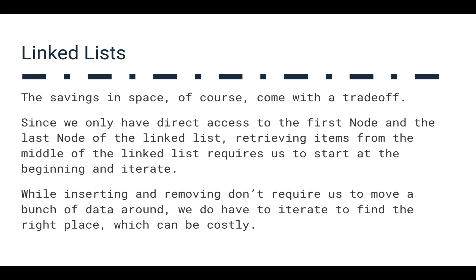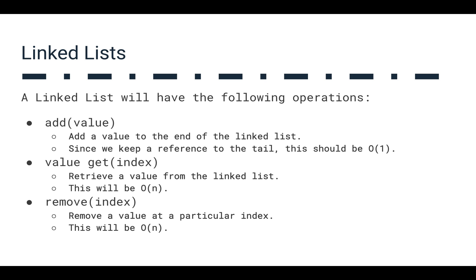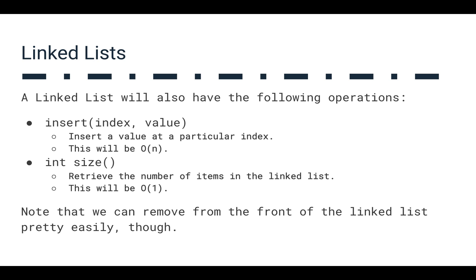So retrieval from the middle isn't going to be very efficient. And inserting or removing — with the dynamic array, we could insert a value at the beginning but had to move everything. In a linked list, we don't have to move things around, but we do have to figure out where they go. If we want to insert something into the middle, we have to iterate: head, next, next, next, next until we get to that particular place, and then put that value in — which could be costly. So a linked list has an add operation that should be constant time since we have the tail reference. But retrieving a value is O(N) because we have to iterate. Removing is also O(N) because we have to iterate to find where the value is before removing it. Inserting is O(N) as well for the same reason.